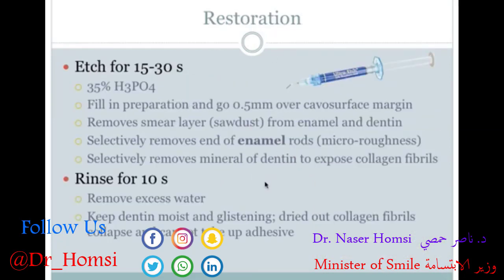For restoration, use etching first for about 15–30 seconds. Fill in the preparation and go a little bit over the cavo-surface margin to ensure everything is being etched and to remove the smear layer — basically the sawdust of tooth structure that remains after drilling. The etch selectively removes the ends of the enamel rods and selectively removes the mineral of dentin to expose the collagen fibrils. The etch is most effective on enamel.